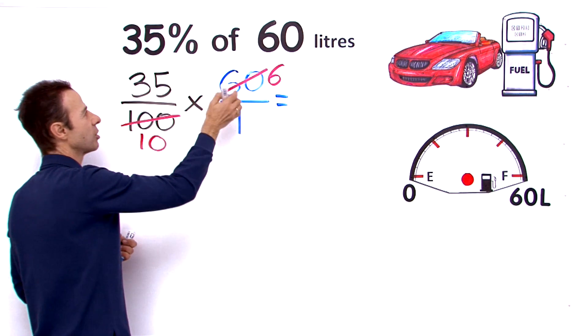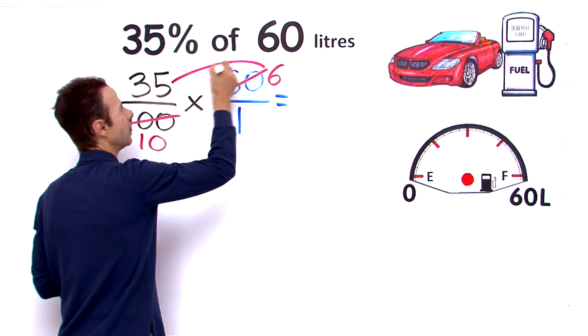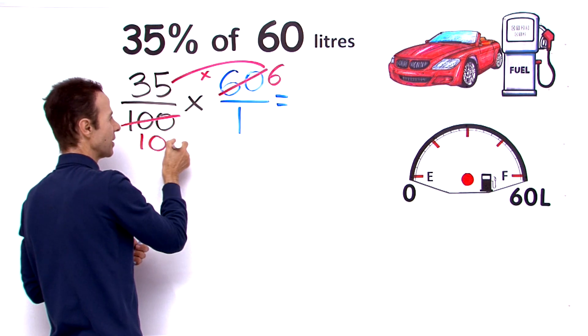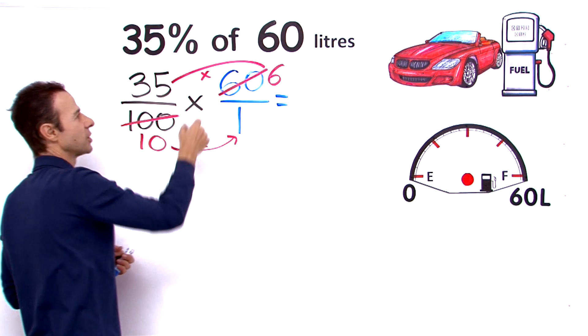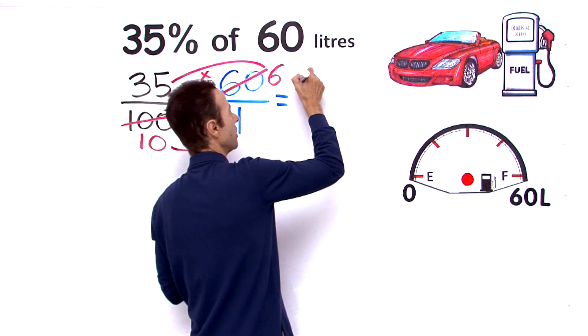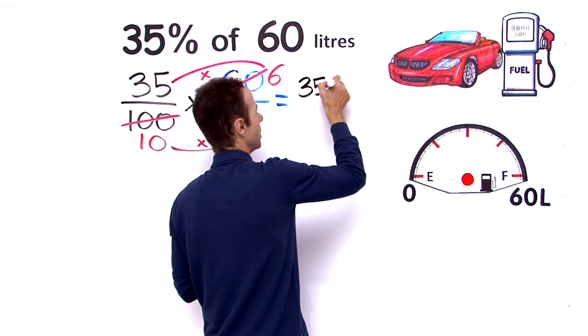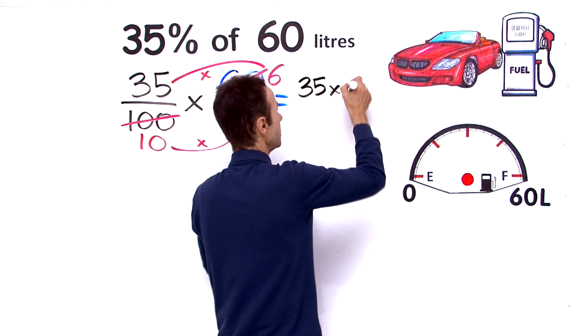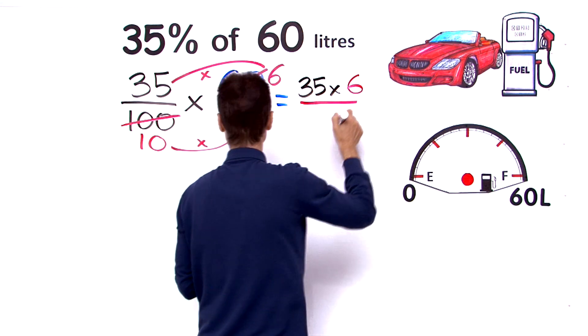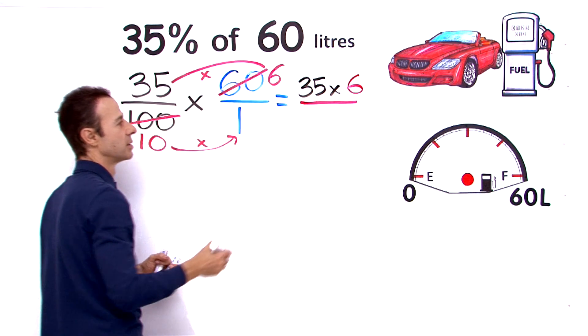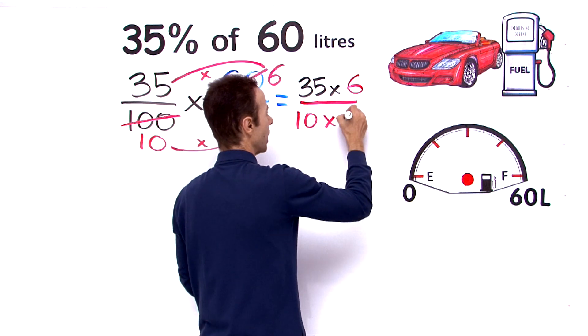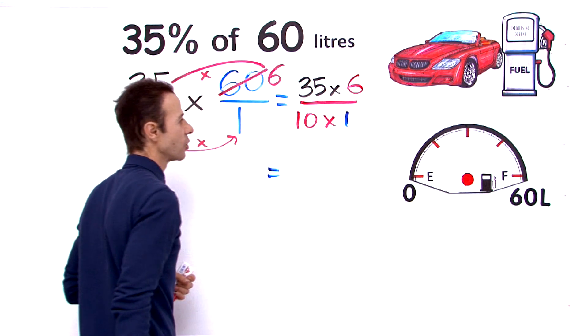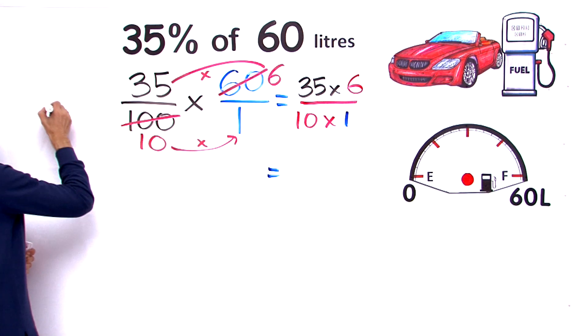Now all we have to do is multiply across. So 35 times 6 and then 10 times 1. So let's go and do that: 35 times 6, all over 10 times 1. Let's further simplify this. 35 times 6, what is 35 times 6? Let's work that out over here.